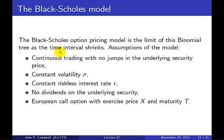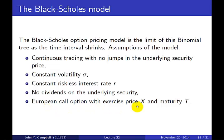When we consider this limit, we're making the following assumptions: there's continuous trading in the asset with no jumps in the underlying security price, so the price moves continuously; it has constant volatility sigma — by volatility I mean standard deviation; there's a constant riskless interest rate R; and there are no dividends on the underlying security. We're pricing a European call option with exercise price X and maturity T.